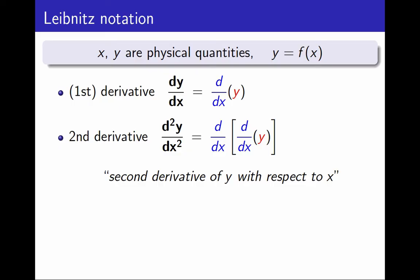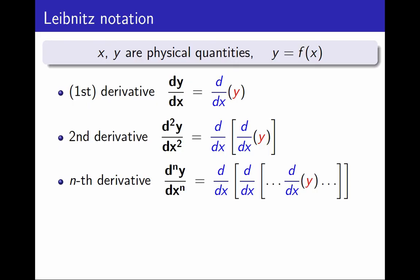More generally, how do I write the nth derivative with this notation? d^n y over dx^n. Think of it as applying the operator d over dx, n times to the physical quantity y. And we call it the nth derivative of y with respect to x.